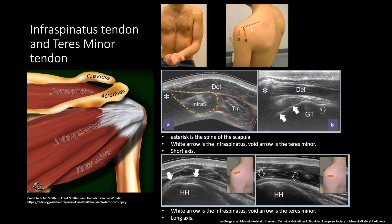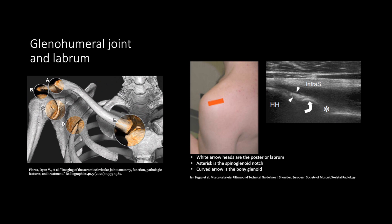The infraspinatus muscle is posterior to the scapula, right below the scapular spine. The teres minor muscle is right below this, both attached to the greater tuberosity. For positioning, you want to place the hand so it's pointing to the opposite side or across your shoulder, similar to the positioning of the long head of the biceps tendon. Use the spine of the scapula as a landmark. Move the transducer down to see the infraspinatus and more down to see the teres minor muscle. At the level of the infraspinatus and teres minor, if you move a little more medially, you can sometimes see the posterior labrum. Often you have to increase the depth and sometimes it's difficult to see depending on the patient.